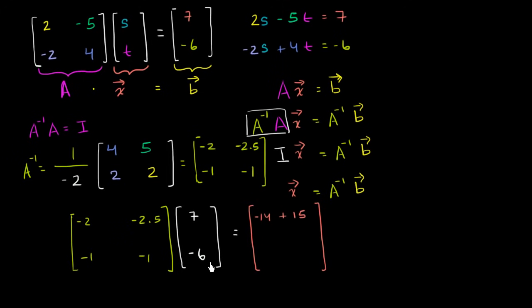Negative two point five times negative six is positive fifteen. And then we're going to have negative one times seven, which is negative seven, plus negative one times negative six. Well that is positive six. And so the product A inverse B, which is the same thing as the column vector X, is equal to, we deserve a little bit of a drum roll now, the column vector one, negative one.